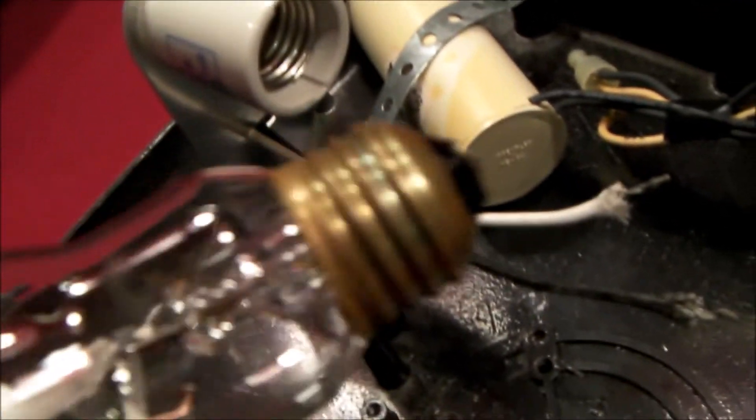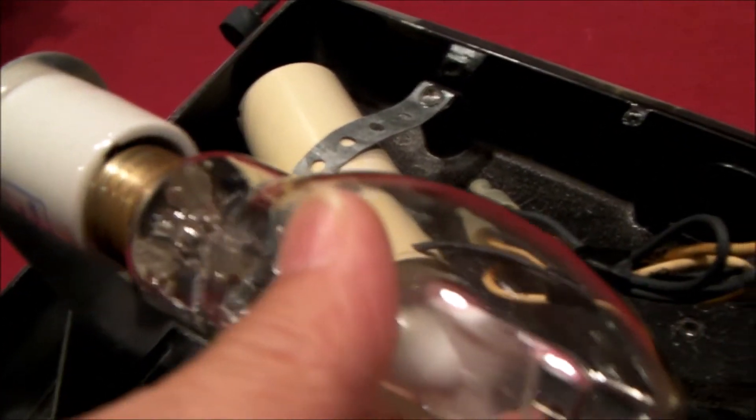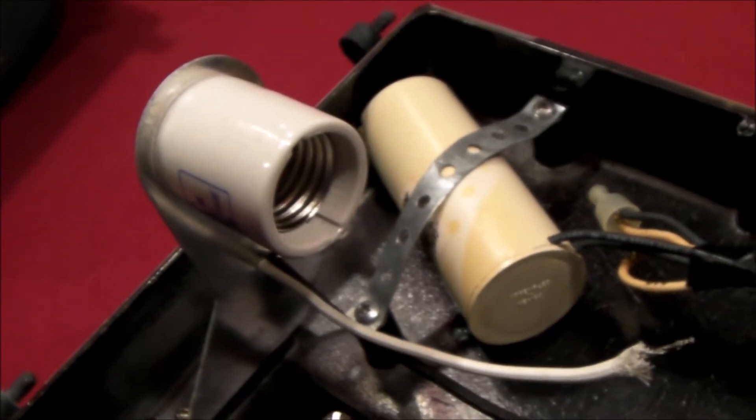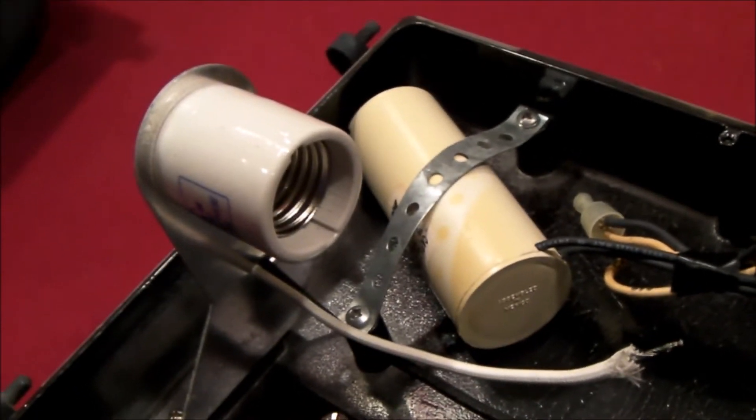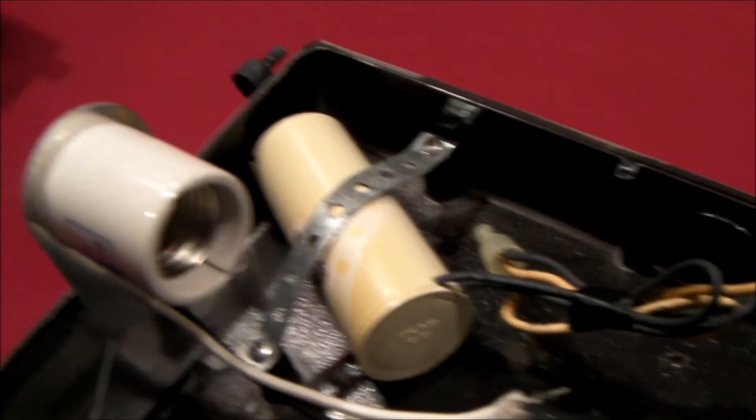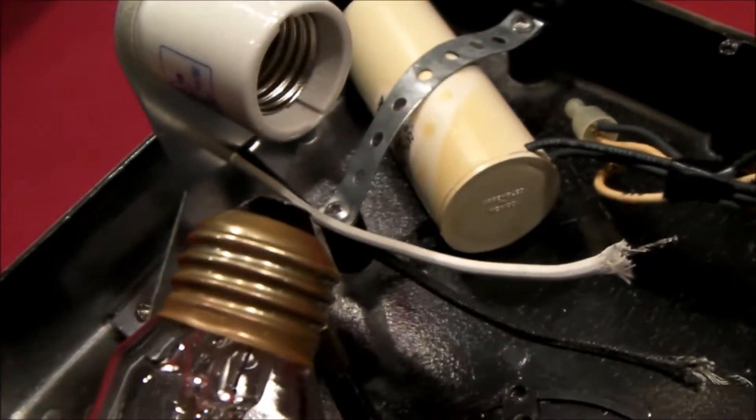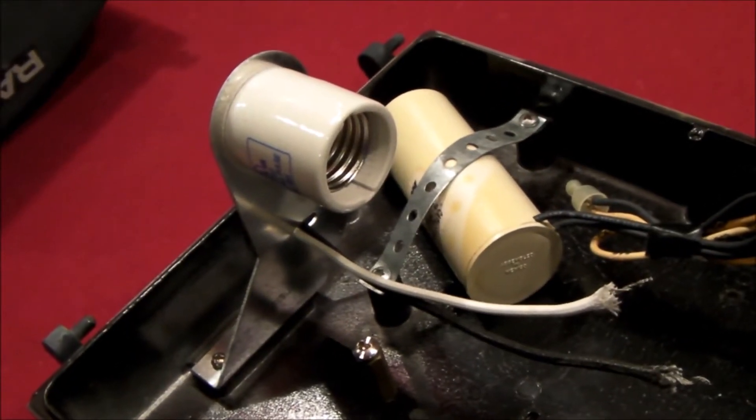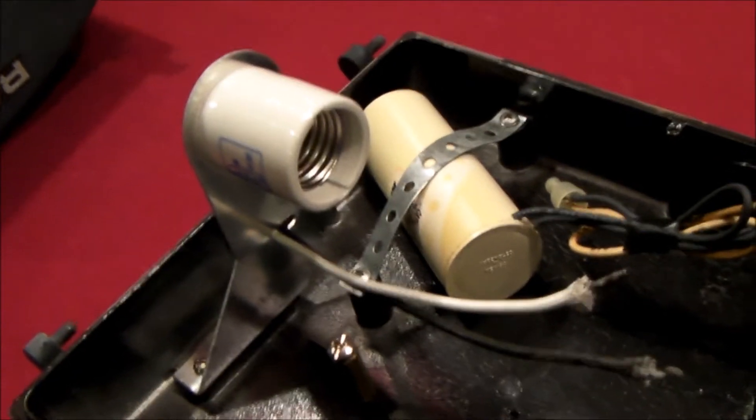Step one in the process is you've got to figure out which base you have on your lamp. This base that you're looking at here happens to be what is called an E26 or a medium base. It is the same as you find on most of the incandescent lamps that you have in your house. Now that you know the base size, let's look at the lamp.